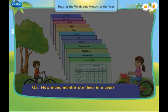How many months are there in a year? There are twelve months in a year.